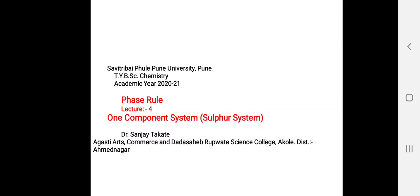Hi everyone. In the last lecture we discussed the one-component system, that is the water system. In this lecture, we are again going to consider a one-component system, that is the sulfur system. The water system and the sulfur system are the best examples of the one-component system. Let us discuss the sulfur system and the phase diagram of the sulfur system.